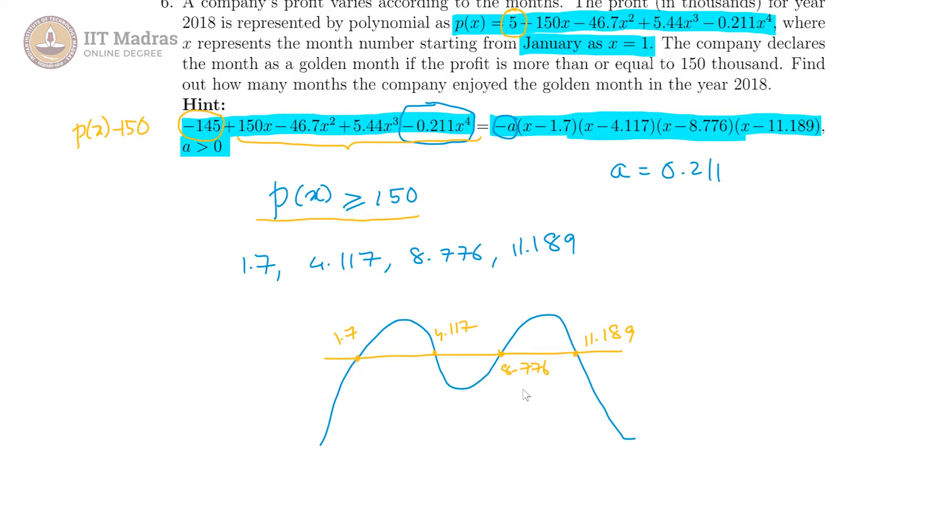So whenever this polynomial that we have drawn here is greater than it, we have a golden month. So that would be month 2, 3 and even 4.